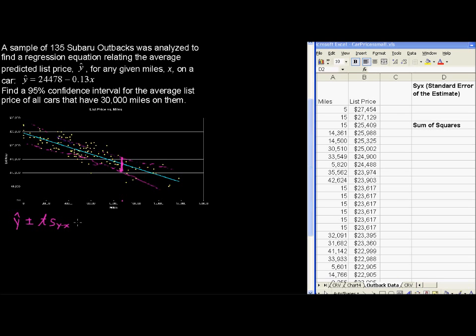Multiplied by the standard error of the estimate, s sub yx, multiplied by the square root of a lot of stuff. 1 over the sample size n, plus the square of the difference of this x value, in our case it's going to be 30,000 miles, minus x bar, the mean of all of the x values, so square of that difference, over the sum of the squares of x. So all of the given x values, here would be our x values for the miles here, minus the average of all those x values squared, so the sum of all of those. We're going to use Excel to help us in some of these, but we'll plug all these numbers in and then get this confidence interval.